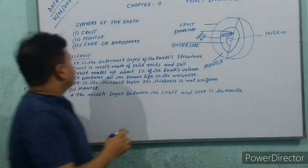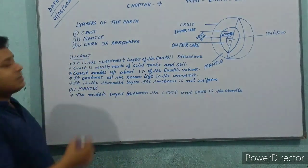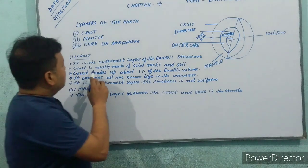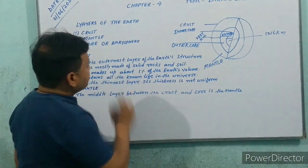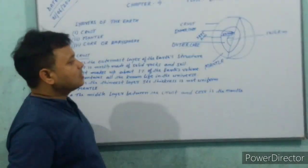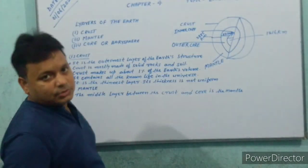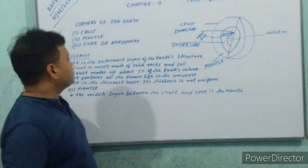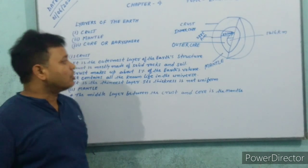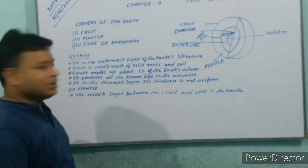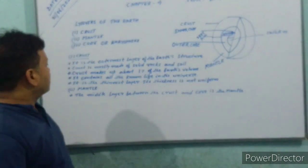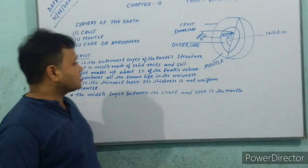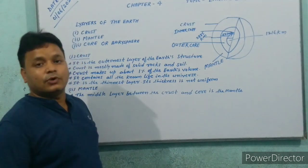Now I am going to teach about the crust. What is crust? It is the outermost layer of the Earth's structure. It is known as the crust. Crust is mostly made of solid rocks and soil. Crust makes up about 1% of the Earth's volume.